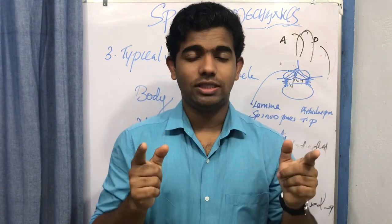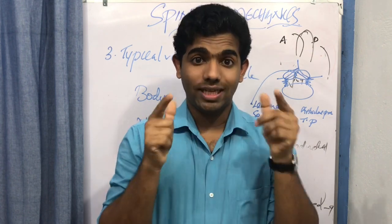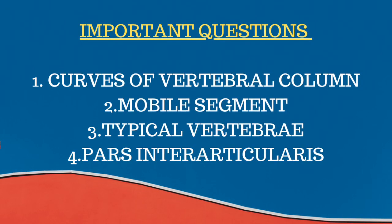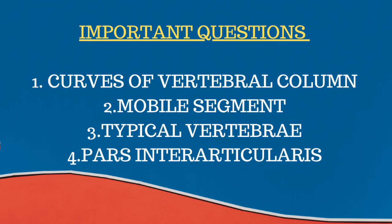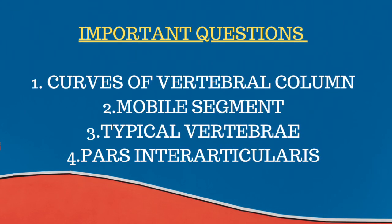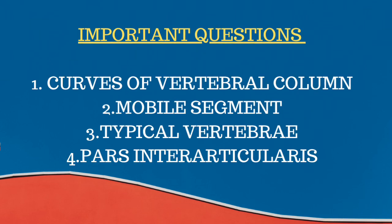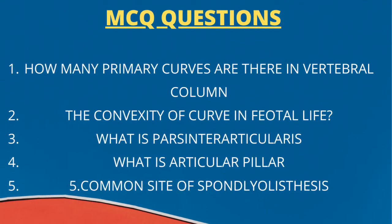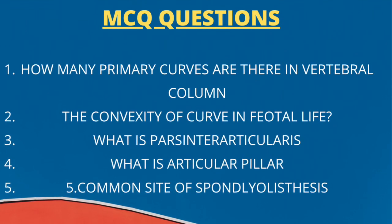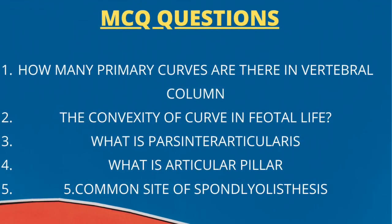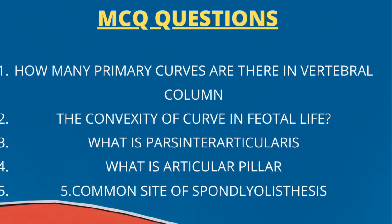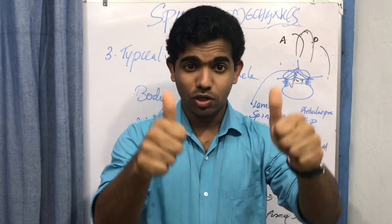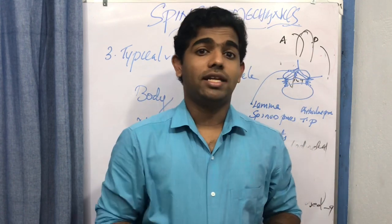To wrap up: the curves of the vertebral column, mobile segment, typical vertebra, and pars interarticularis can all be short-note questions. Key MCQ points include: there are two primary curves (kyphotic), the fetal curve has posterior convexity, the pars interarticularis is a region of the lamina, and the most common site of spondylolisthesis is the L5-S1 region.